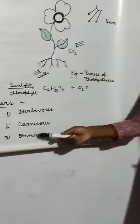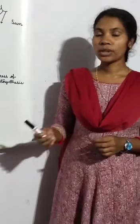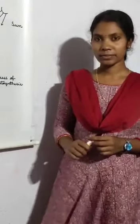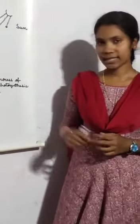Third one is omnivores. Omnivores are also known as omnivorous animals. These animals feed on both plants and animals. For example, cats, dogs, human beings, etc.